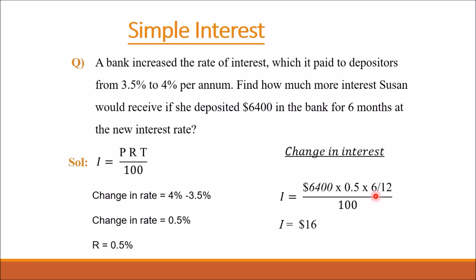The time period is given in months, so it will be converted into years by dividing 6 by 12. According to the formula, we divide the whole product by 100. This gives us a result of $16. So $16 is the difference in the interest amount which Susan would have received.